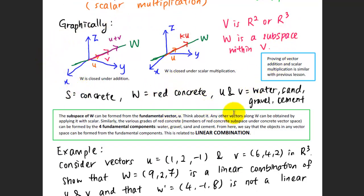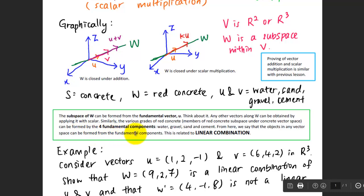The subspace W can be formed from fundamental vectors. Any other vector along W can be obtained by applying a scalar. Similarly, the various grades of red concrete — members of the red concrete subspace under the concrete vector space — can be formed by the four fundamental components: water, gravel, sand, and cement. From here, we say that objects in any vector space can be formed from fundamental components, and this is related to linear combinations.